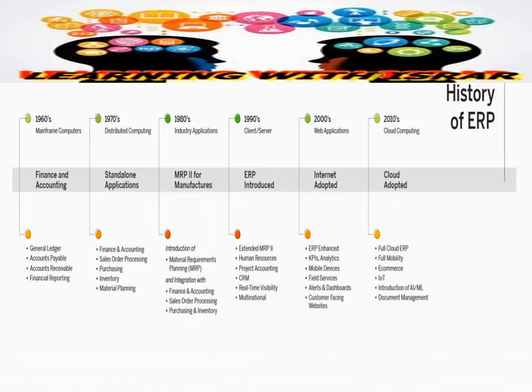In the 1990s we had client-server architecture, and ERP was formally introduced for customers. In the 2000s, internet adoption drove ERP enhancements including KPI analytics, mobile devices, field services, and other capabilities. After 2000, we moved into cloud computing with full cloud ERP, full mobility, e-commerce, IoT, artificial intelligence, machine learning, and document management. These represent the brief history of ERP.